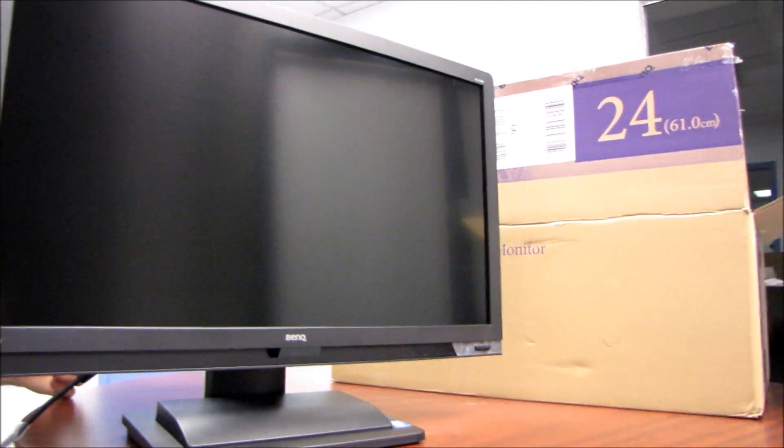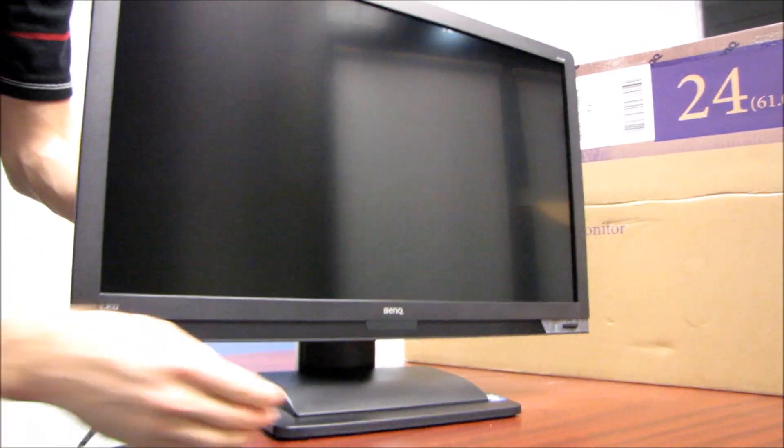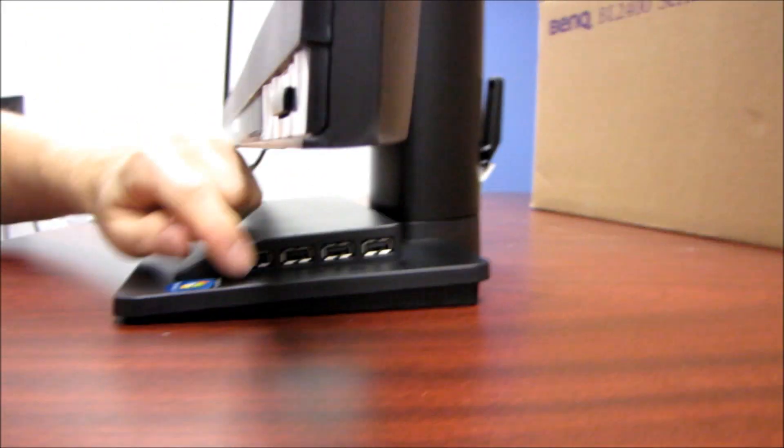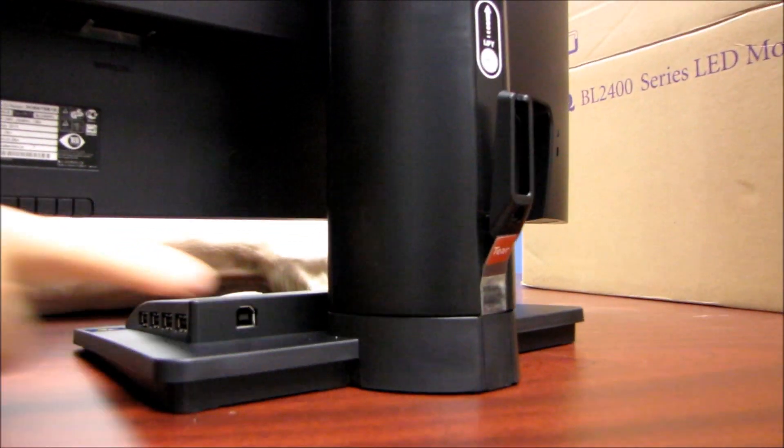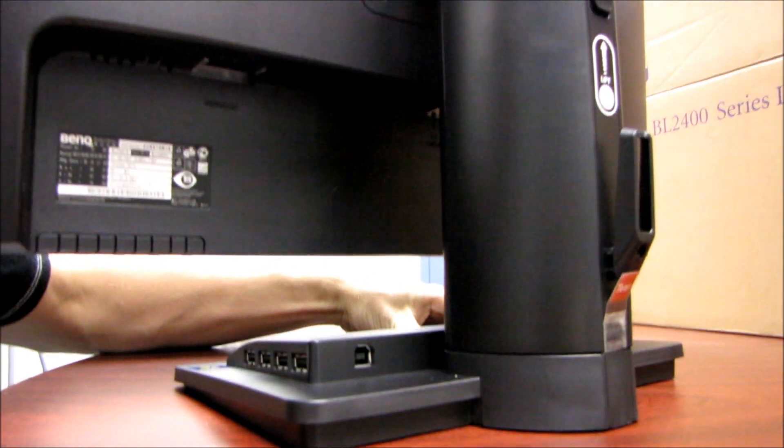So I want to show you a few things right off the bat. First of all, there is a built-in USB hub. So if you go and look on the right-hand side of the monitor here, you've got four USB ports. So that was what that A to B cable was for. You just plug from here into the back of your computer, and that's going to be your hub right there.